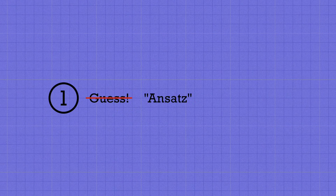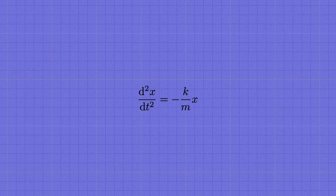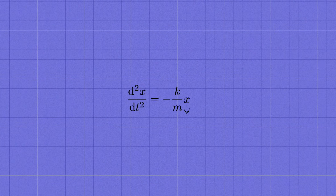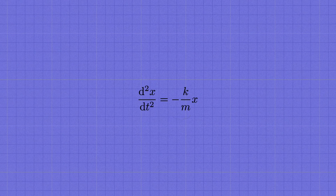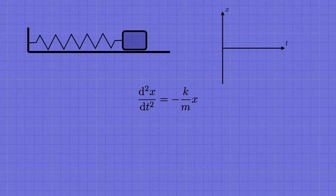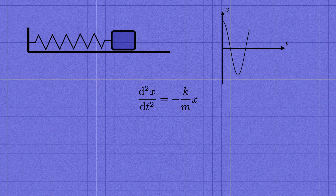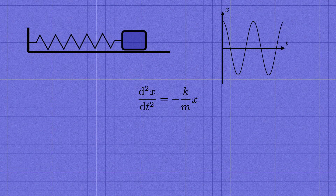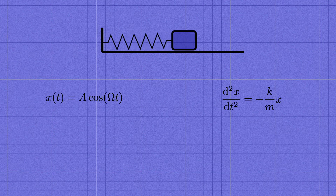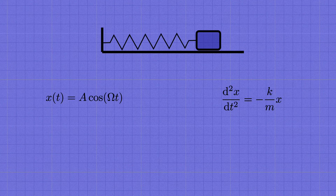Starting off with method number one: it might sound a little silly, but the first thing you can do, especially with a relatively simple looking equation like this one, is to try to guess the solution. Except that guessing doesn't sound very sophisticated, so you'll often see textbooks call it making an ansatz, which is German and sounds much fancier. All that means is we're going to ask ourselves if we can think of a function which, when we take its derivative two times, we get back the same function times some negative number. Using our physical intuition that the block is going to oscillate, functions like sine and cosine might come to mind. So let's make our ansatz and write down a guess of the form a cosine omega t, where a and omega are some constants we don't know yet.